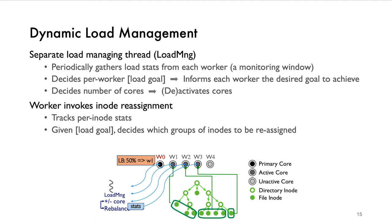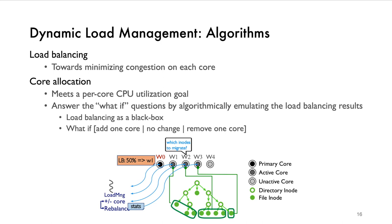The realization of load management requires each worker to invoke an inode reassignment mechanism to shift load between cores. Given the load goal from the load-managing thread, each worker decides which inodes to reassign according to its local detailed stats. Our scaling algorithm is decoupled into two compatible components: the load-balancing algorithm minimizes congestion on each core for maximum performance given a fixed core count, while the core-allocation algorithm handles CPU efficiency and decides the number of cores for Userver. In each monitoring window, the core-allocation algorithm emulates the load-balancing result under three conditions — adding one core, no change, and removing one core — and by comparing the emulation result with a configurable CPU utilization goal, the load-managing thread decides which plan to adopt.